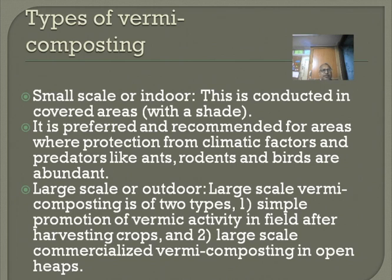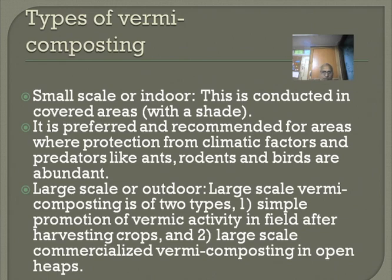There are two types of vermicomposting: small-scale or indoor, and large-scale or outdoor. Small-scale or indoor vermicomposting is conducted in a covered area. It is preferred and recommended for areas where protection from climatic factors and predators like ants, rodents, and birds is needed. Large-scale or outdoor vermicomposting is of two types: simple promotion of vermic activity in the field after harvesting crops, and large-scale commercialized vermicomposting in open heaps.